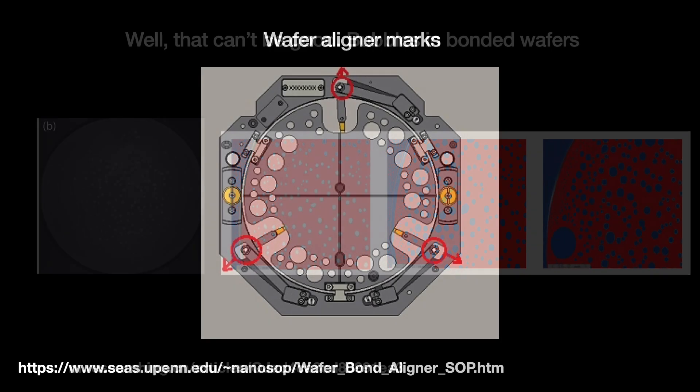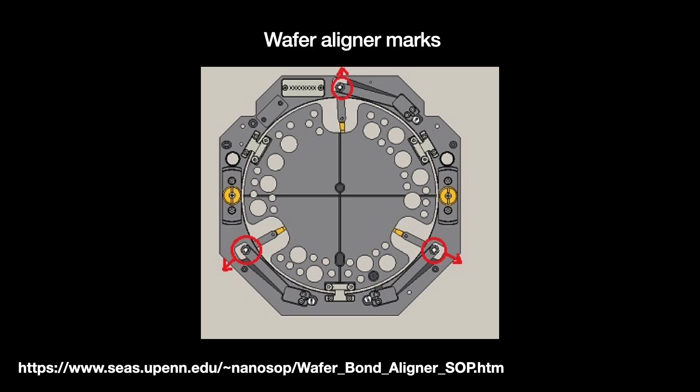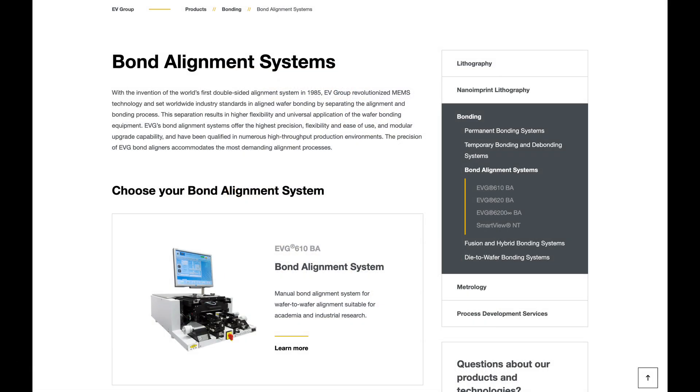And then there is alignment. Anyone trying to stick something onto something else gets annoyed if things aren't properly aligned. Modern wafers now have copper connections passing across the bonding boundary and misalignment of these connections are bad. In the early days, we aligned two wafers together for bonding using fixtures. But as tolerances got stricter, new optical-based alignment tools like those from EV Group in Austria have become more prominent.